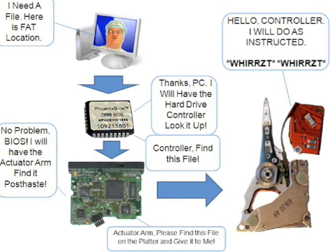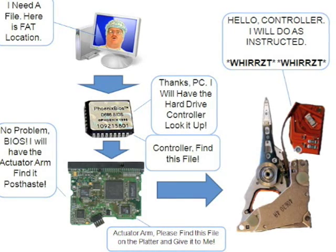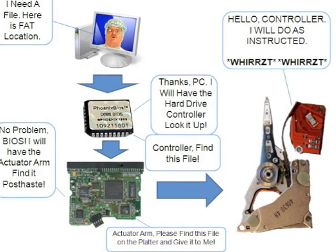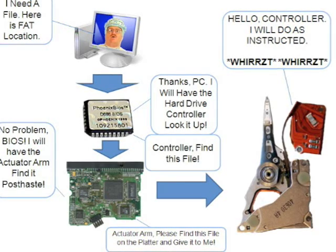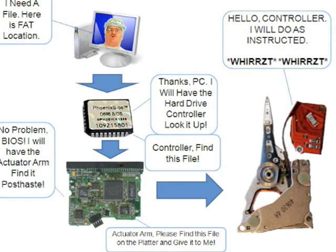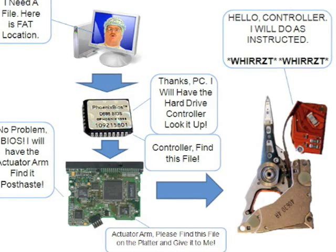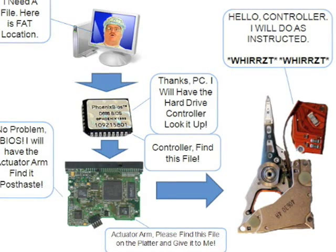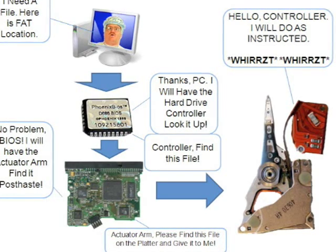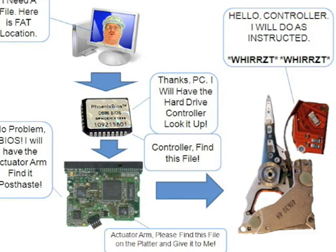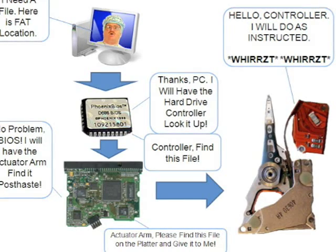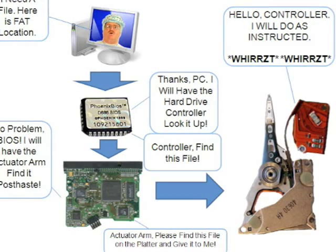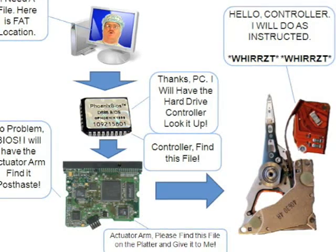The controller board looks up where the document in the file system is actually physically stored on the platters, clusters, tracks, and cylinders. Once the document is located, it is passed back to the operating system in reverse order. But what happens when a file is deleted?